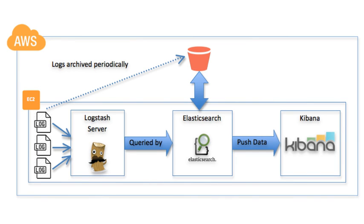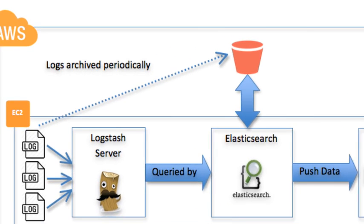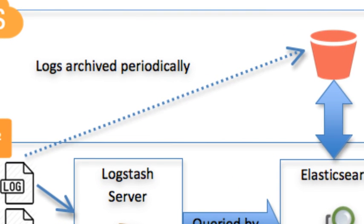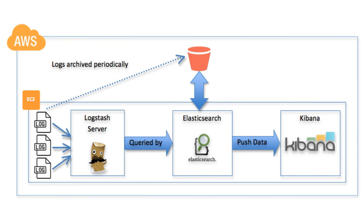Because we can be limited by the amount of storage available, I archive old raw syslogs into an Amazon S3 bucket and delete them along with the processed data from the Logstash syslog server after a specific period of time of being indexed and searchable with ELK — maybe by creating a cron job or some other process.